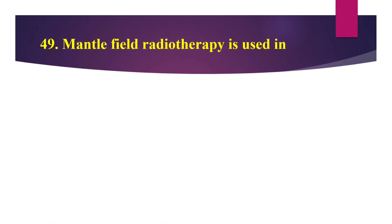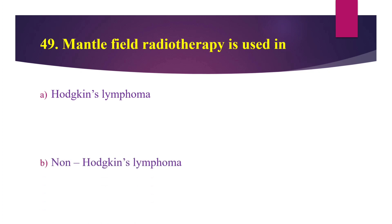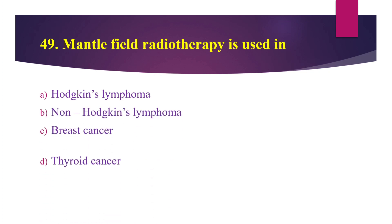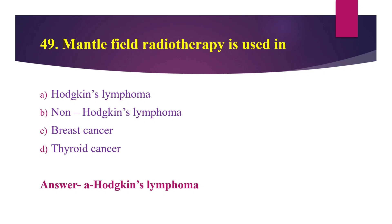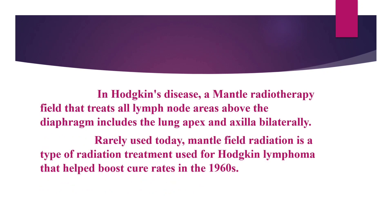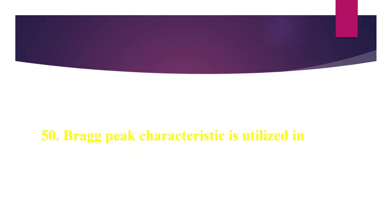Question number 49: Mantle field radiotherapy is used in — Option A: Hodgkin's lymphoma, Option B: Non-Hodgkin's lymphoma, Option C: breast cancer, Option D: thyroid cancer. The answer is Option A — Hodgkin's lymphoma. In Hodgkin's disease, a mantle radiotherapy field treats all lymph node areas above the diaphragm, including the lung apex and axilla bilaterally. It is rarely used today but helped boost cure rates in the 1960s.